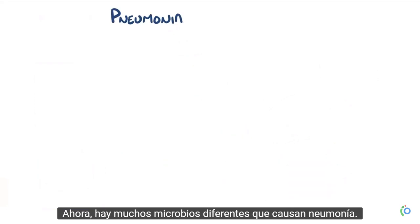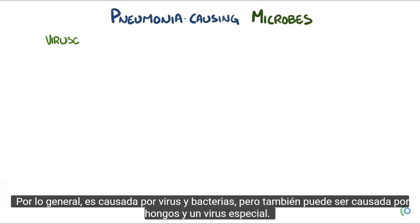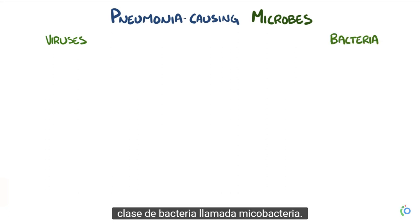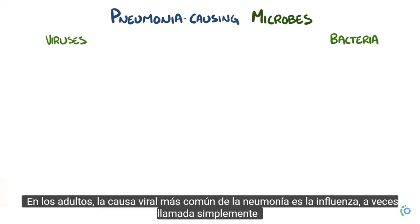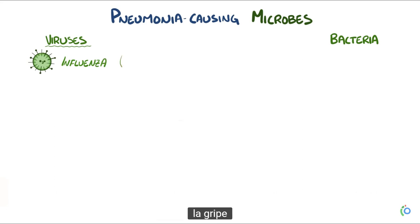There are lots of different pneumonia-causing microbes. Usually it's caused by viruses and bacteria, but it can also be caused by fungi, as well as a special class of bacteria called mycobacteria. In adults, the most common viral cause of pneumonia is influenza, sometimes just called the flu.